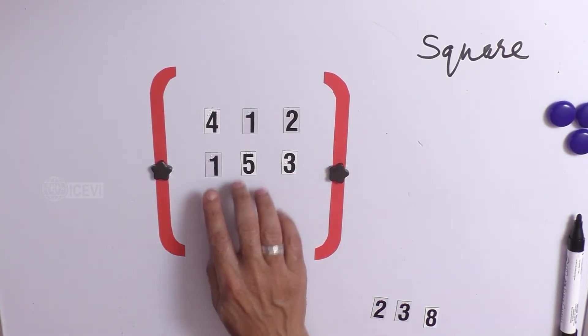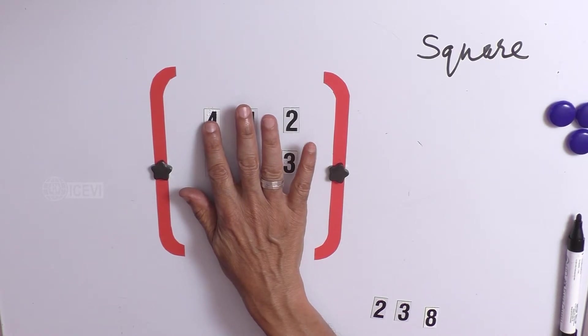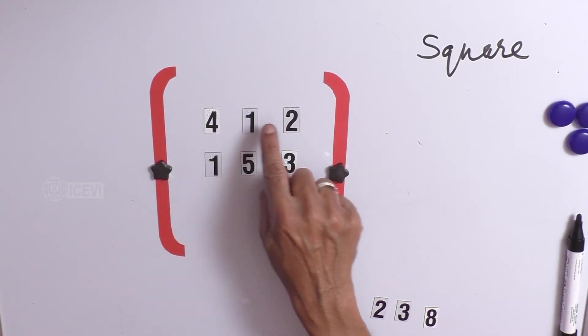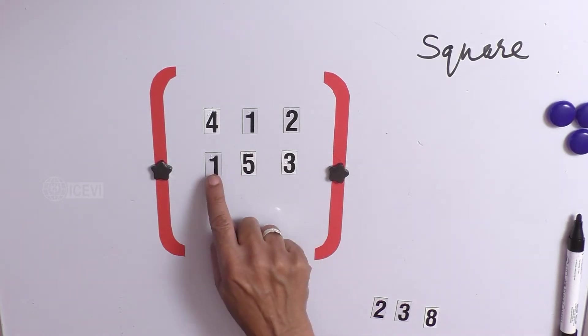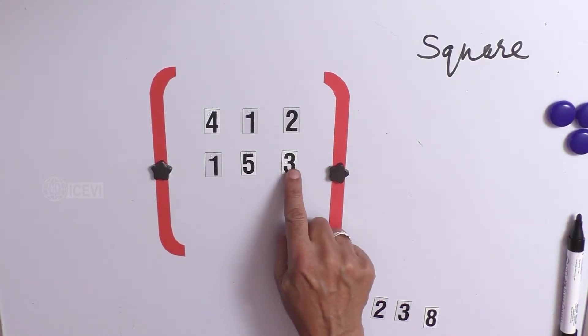There are 6 numbers. That is, in row number 1, it is 4, 1 and 2. In row number 2, it is 1, 5 and 3.